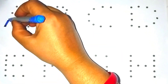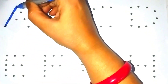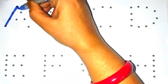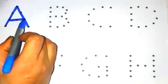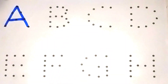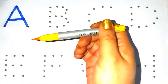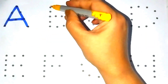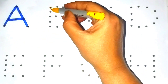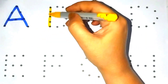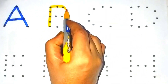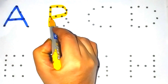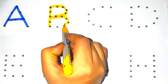A. A for Apple. Yellow color. B. B for Ball.